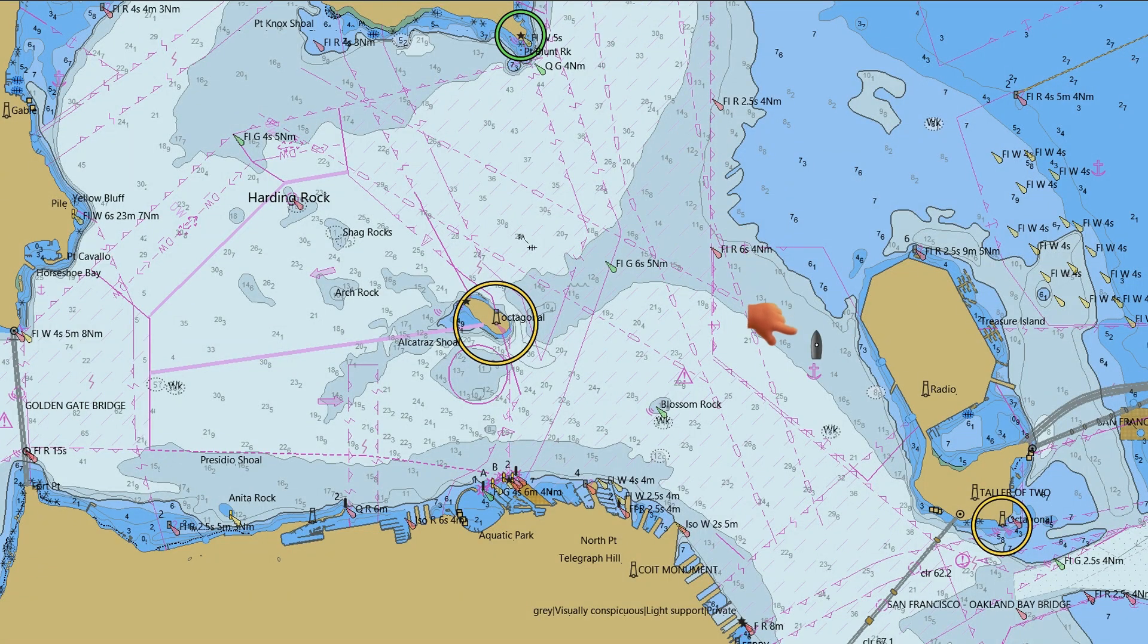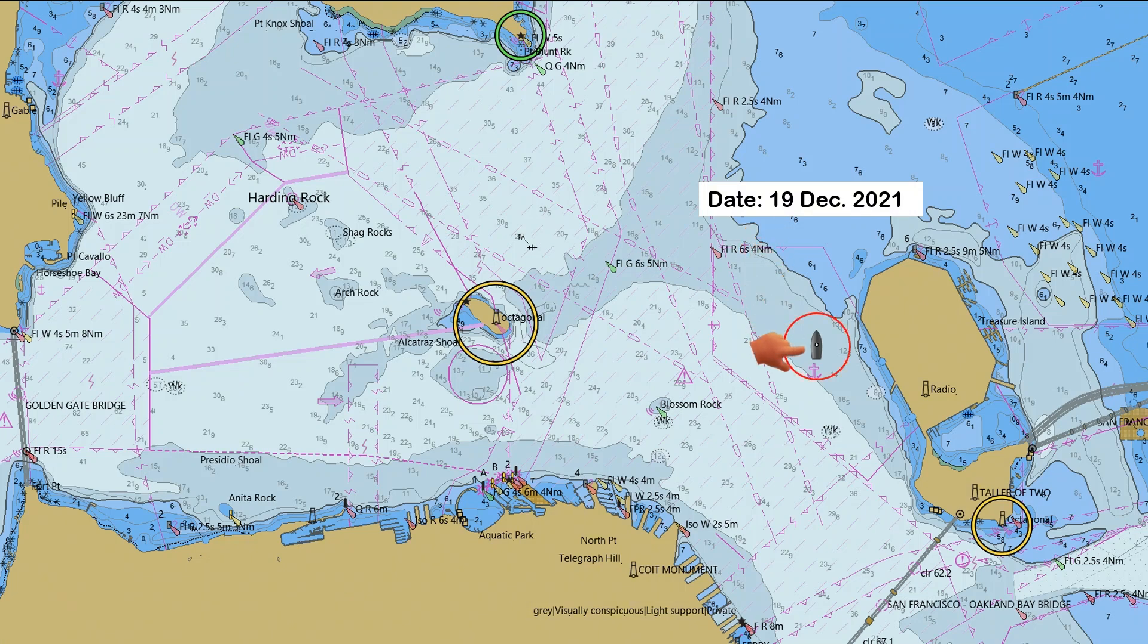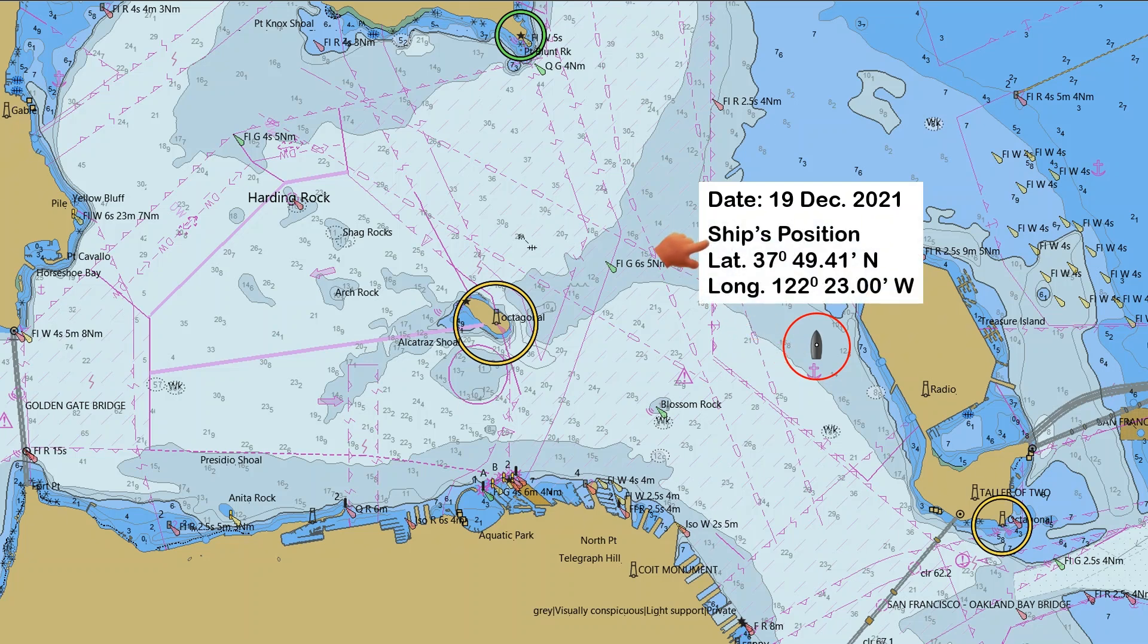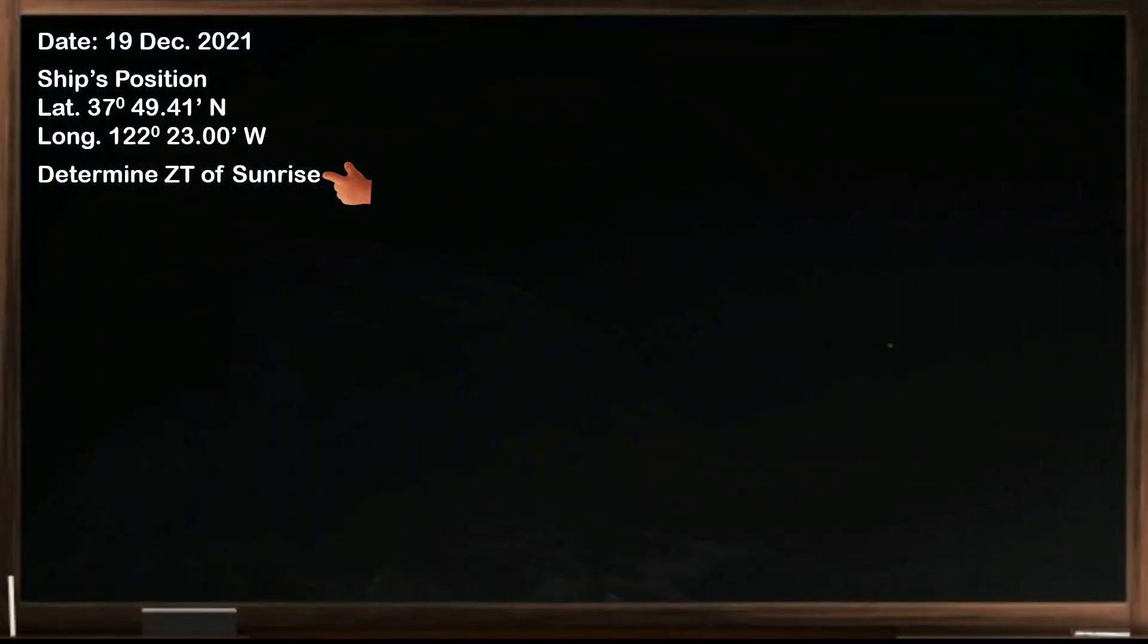In this scenario, on the early morning of December 19, 2021, the ship dropped anchor in Anchorage Area No. 7 in San Francisco, USA. Her current position was latitude 37 degrees 49 decimal 41 minutes north, longitude 122 degrees 23 decimal 0 minutes west. Determine the zone time of sunrise for this date at the given position.